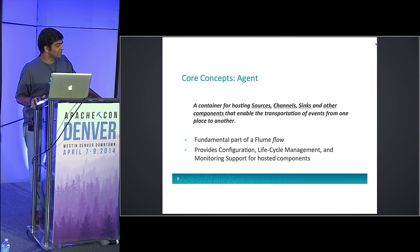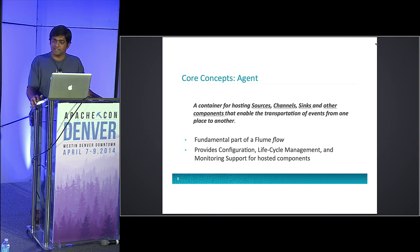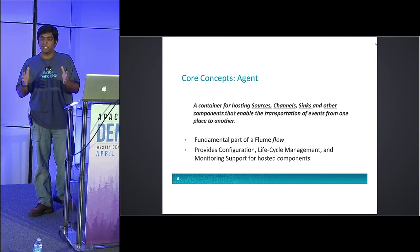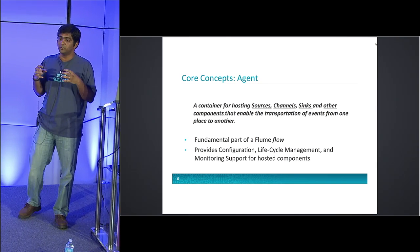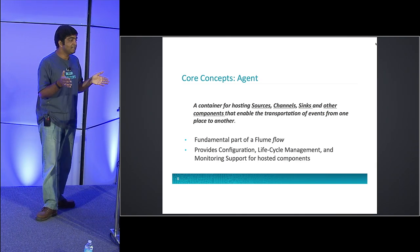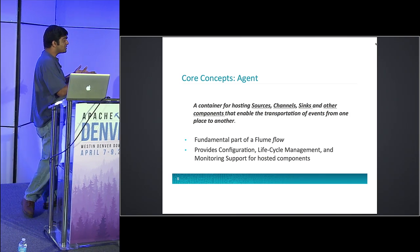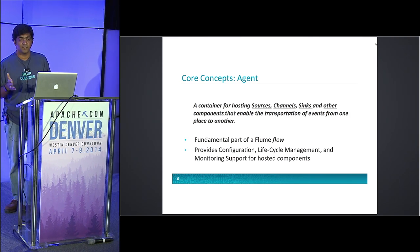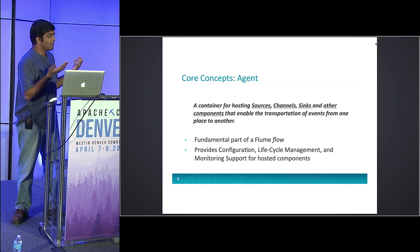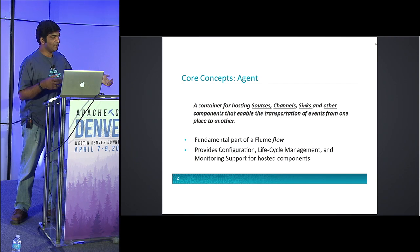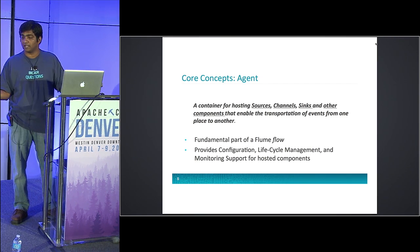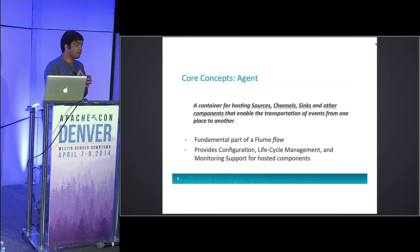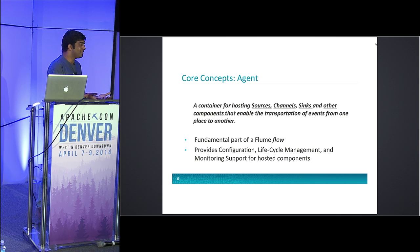Let's talk about what a Flume agent is. A Flume agent is simply a JVM which holds Flume — a single JVM is called the Flume agent. The Flume agent has at least three components: sources, channels, and sinks. A Flume agent simply takes events from one place and puts them in another. This is the basic deployment unit — you cannot deploy just a part of a Flume agent.